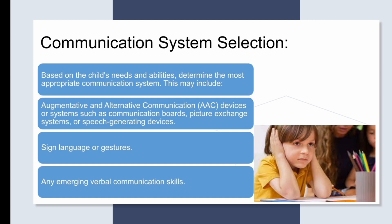Communication System Selection: Based on the child's needs and abilities, determine the most appropriate communication system. This may include Augmentative and Alternative Communication devices or systems such as communication boards, Picture Exchange Systems, or Speech Generating Devices, as well as sign language or gestures, and any emerging verbal communication skills.